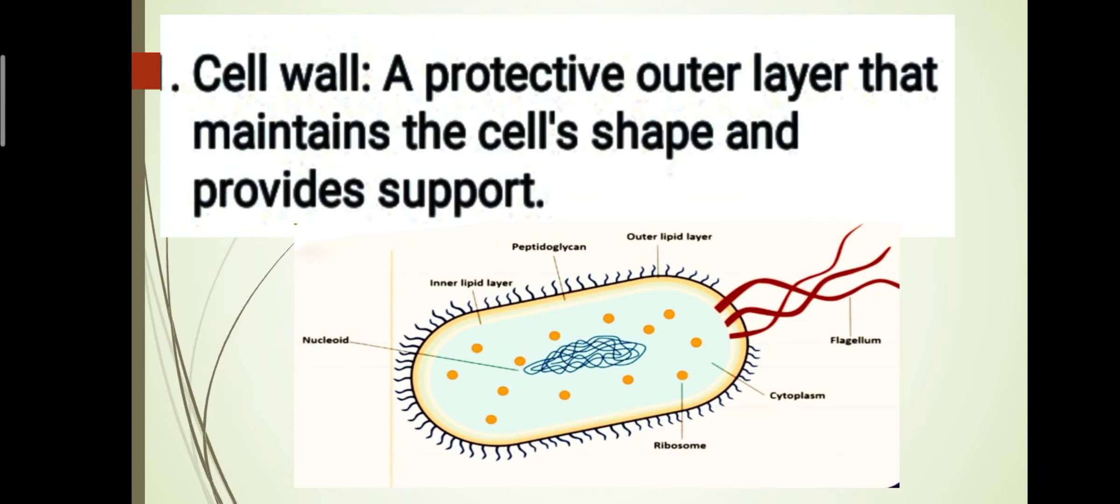Structure of Bacteria. Cell wall: A protective outer layer that maintains the cell shape and provides support.